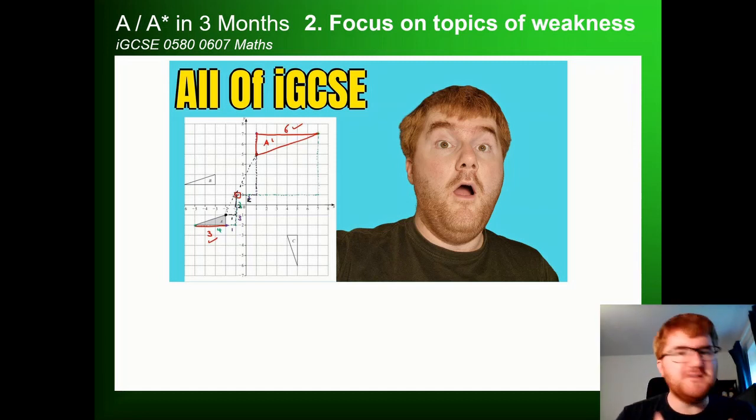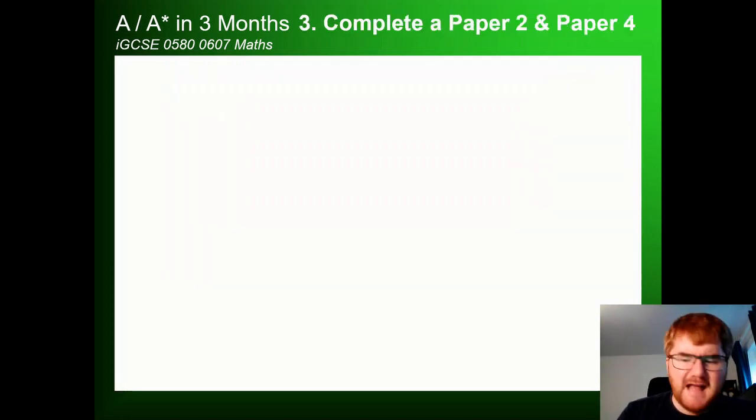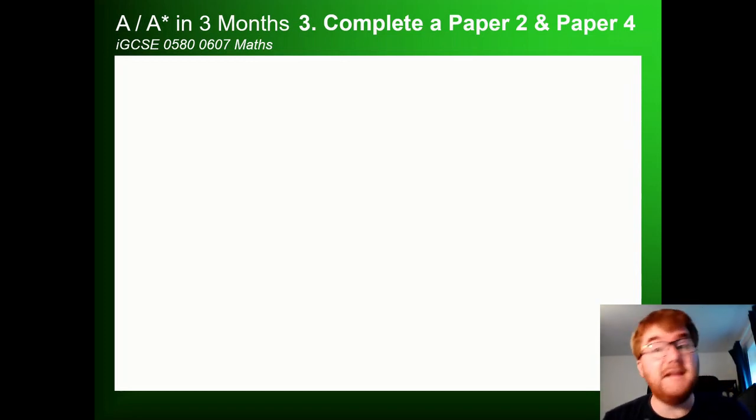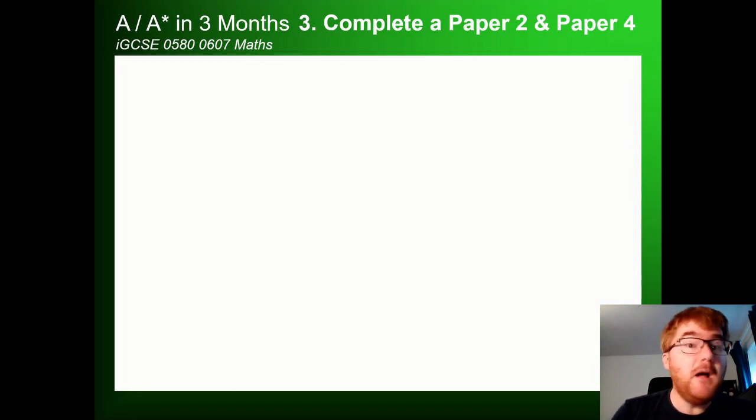Now, once you've gone through those topics of weakness, that could be three or four from that 10 video, maybe volume and surface area as well. Then step three, I think it's an important step to put in here before we go on and look at other weaknesses. And that is complete a paper two or complete a paper four or preferably both. And at this point in the cycle, because you've gone through those top 10 topics, you're going to be getting at least 40, 50% of the paper correct. You're going to feel comfortable with 40 or 50% of the content.